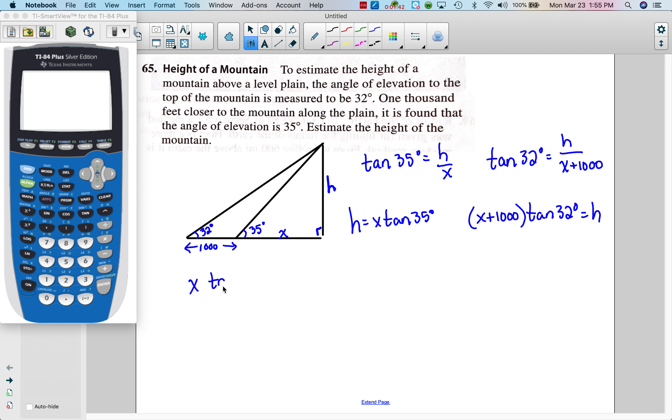So we get X tangent 35 equals X plus a thousand tangent 32. Now hopefully I'm hoping you look at this and if you looked at my written solution for 66, you recognize they all kind of are the same after a while. We're going to do that three-step process: distribute, regroup, and factor.